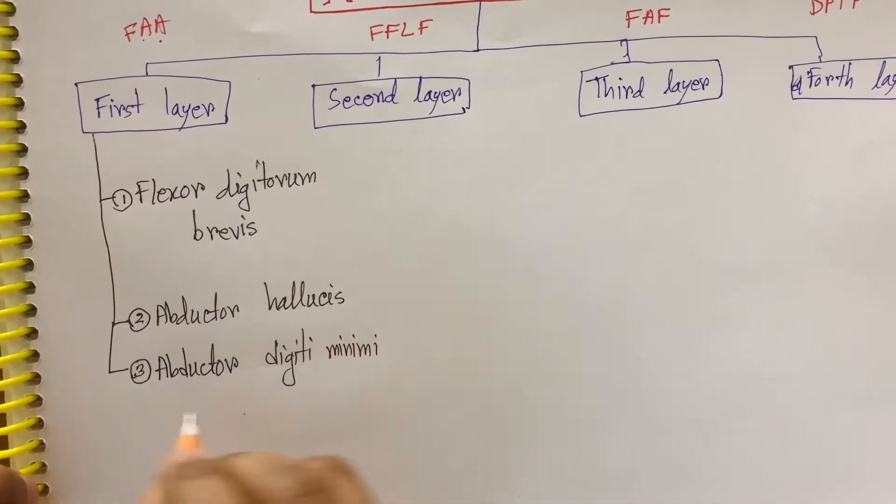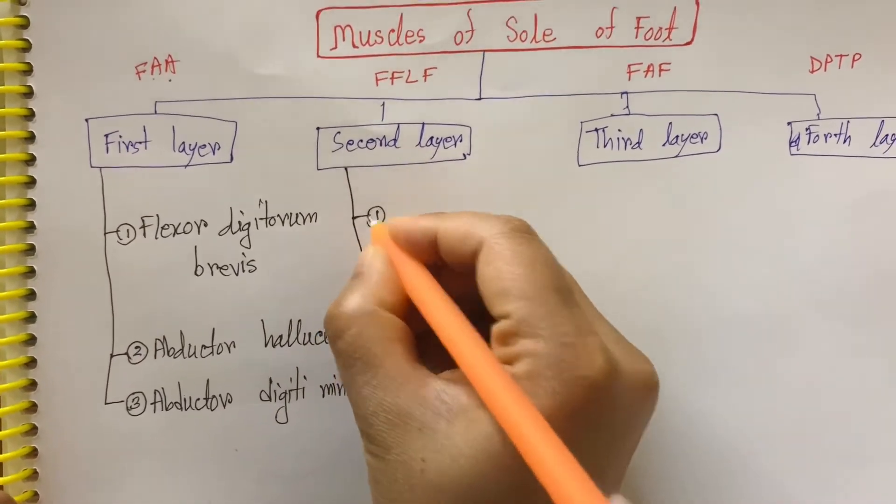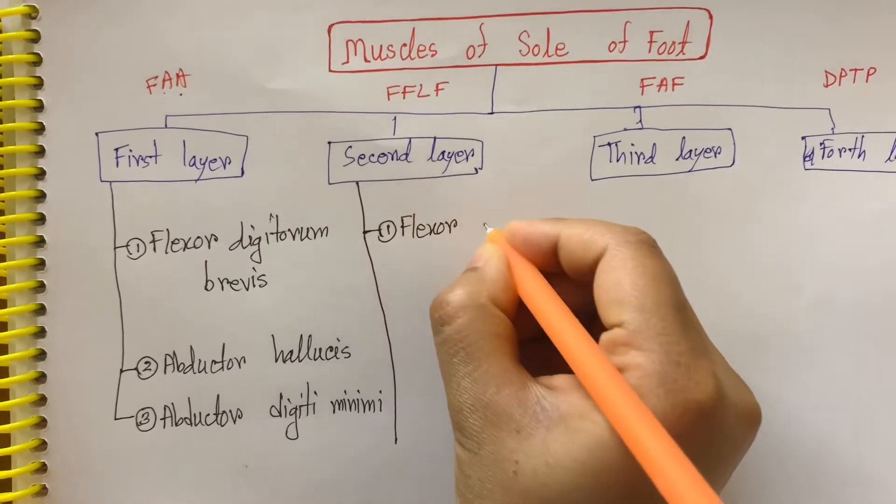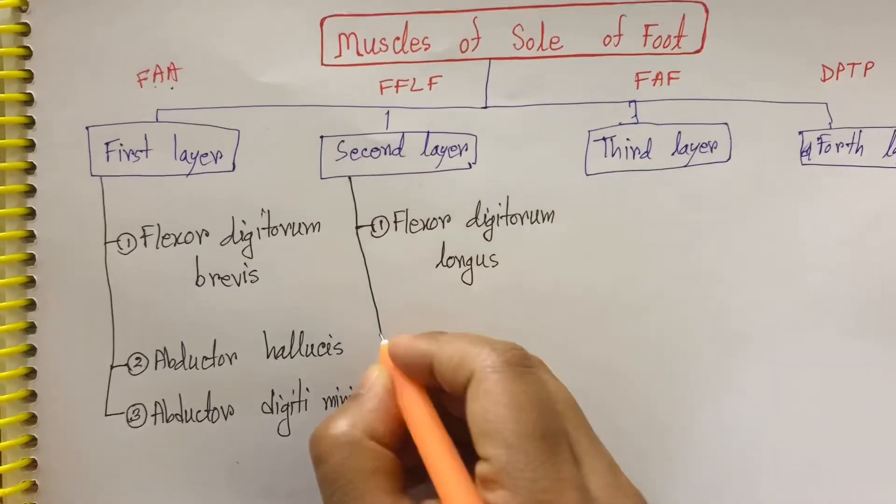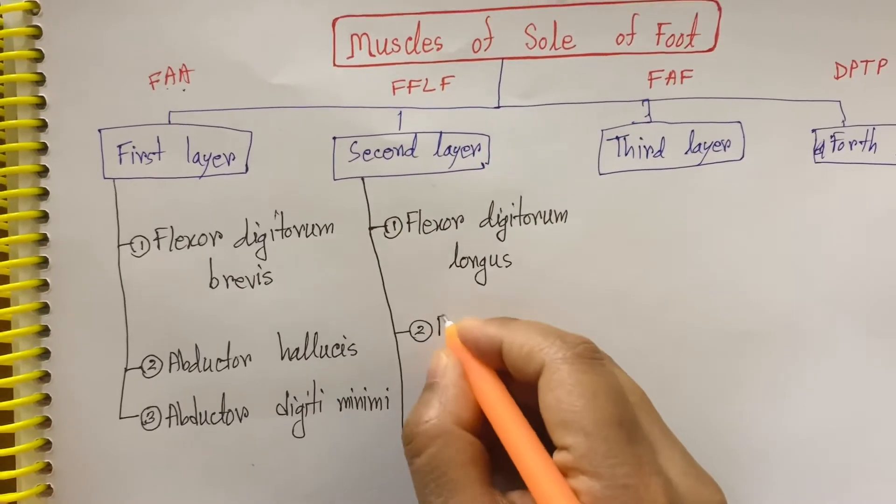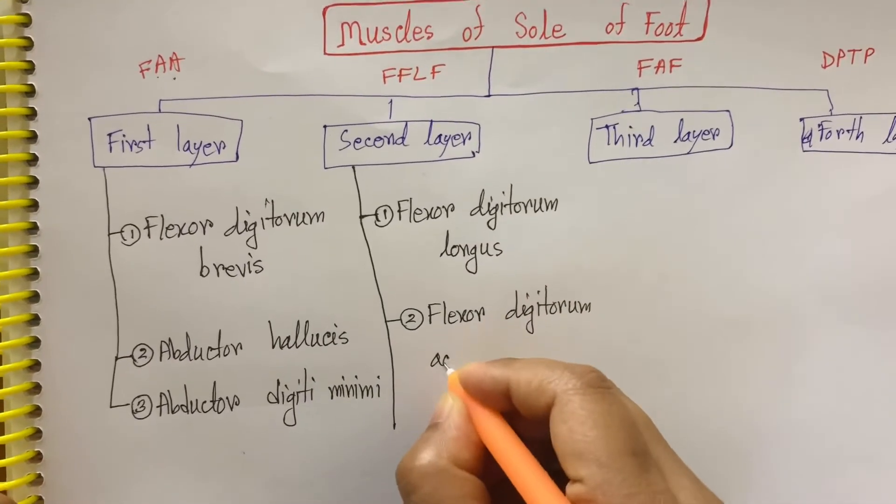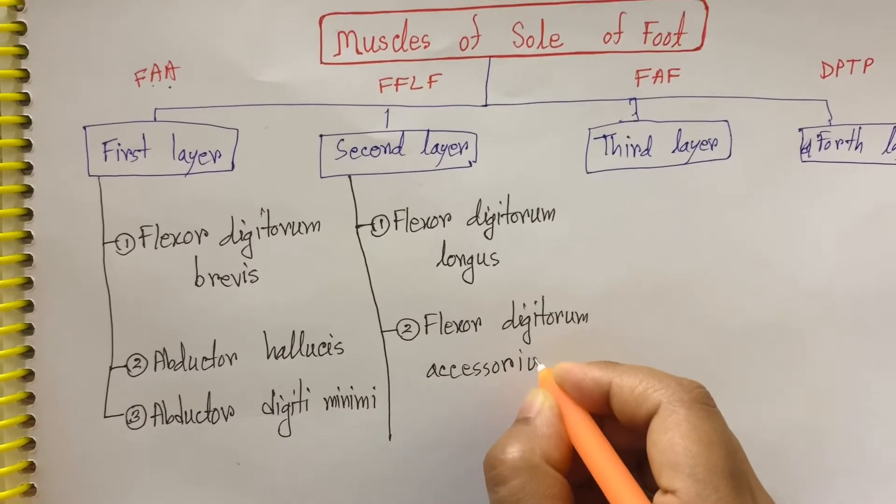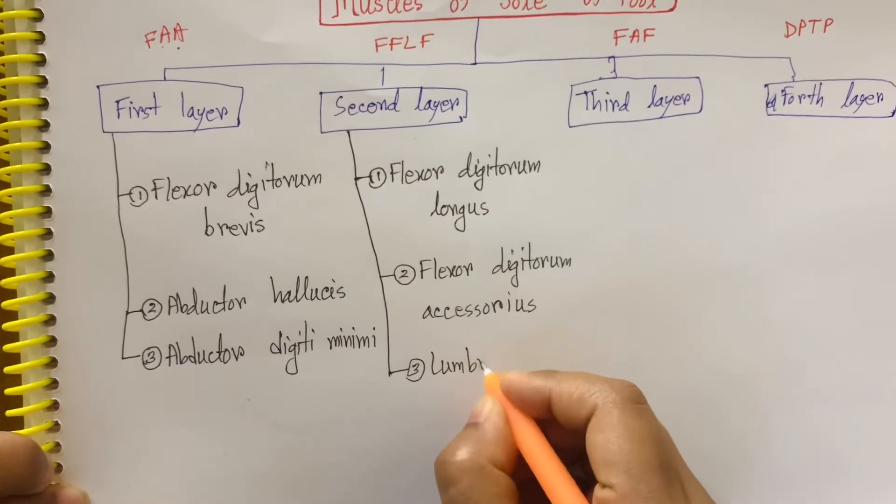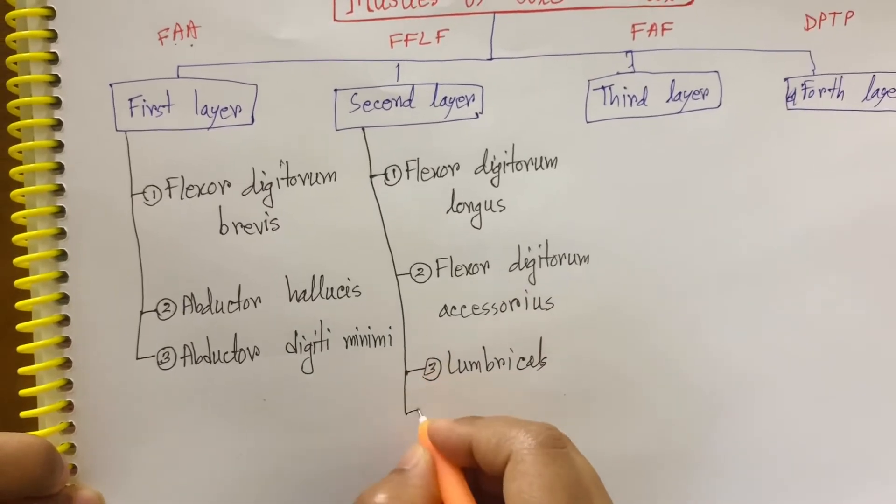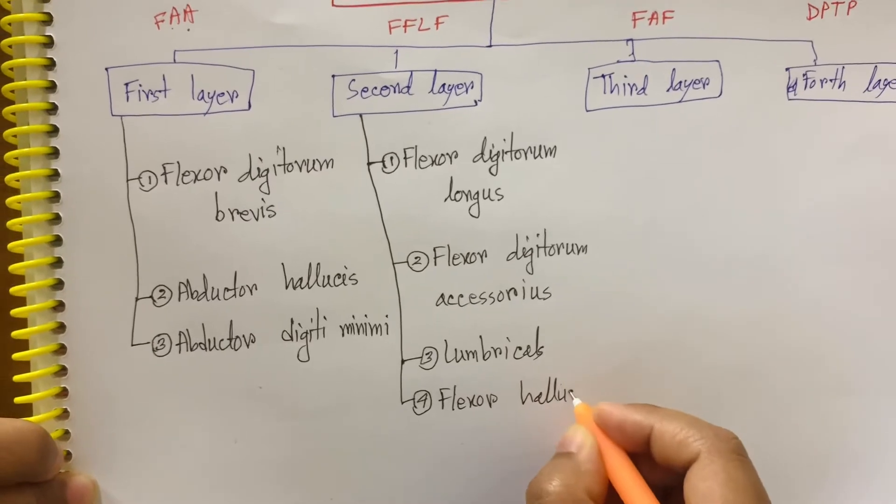Now let's see second layer muscles. Here we have four muscles. F: Flexor digitorum longus. Second F: Flexor digitorum accessories. Third, L: Lumbricals. Fourth: Flexor hallucis longus. These are second layer muscles.